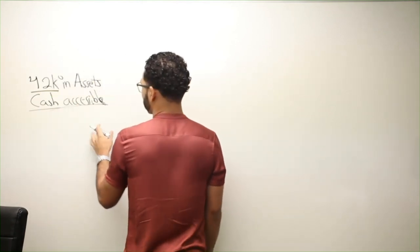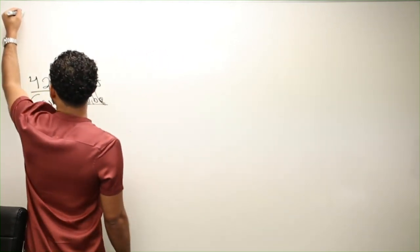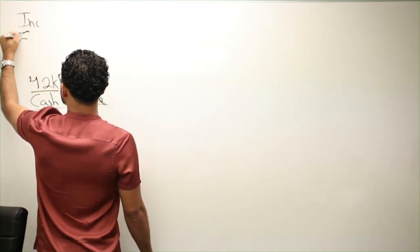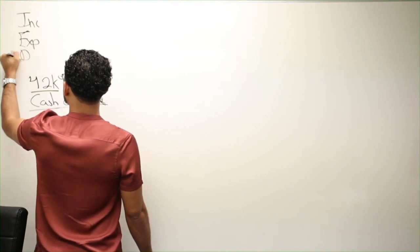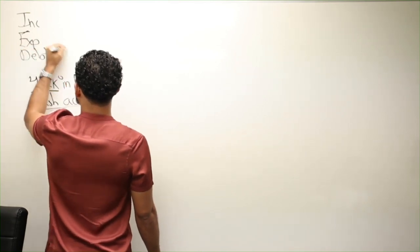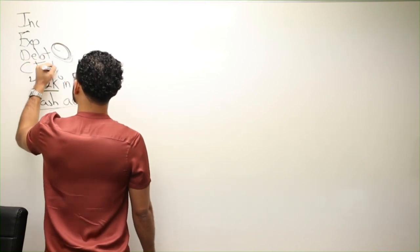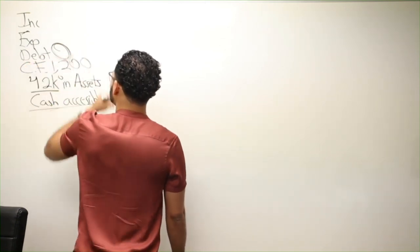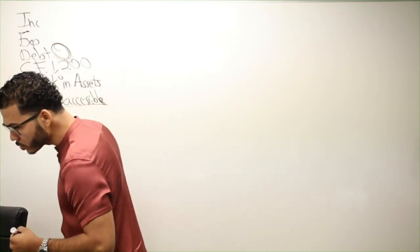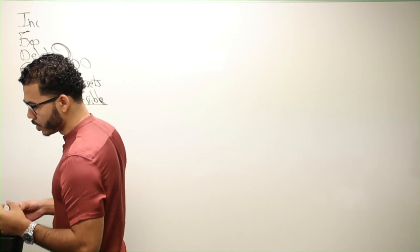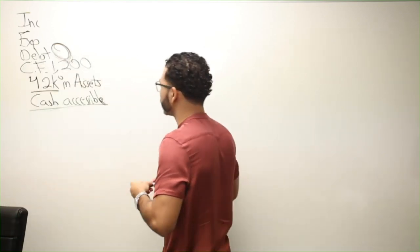Is it cash accessible? Number one, what's your four major numbers, right? What's the four majors? He's got no debt. That's wonderful. And he's got good cash flow. $1,200 is awesome to work with living at home.